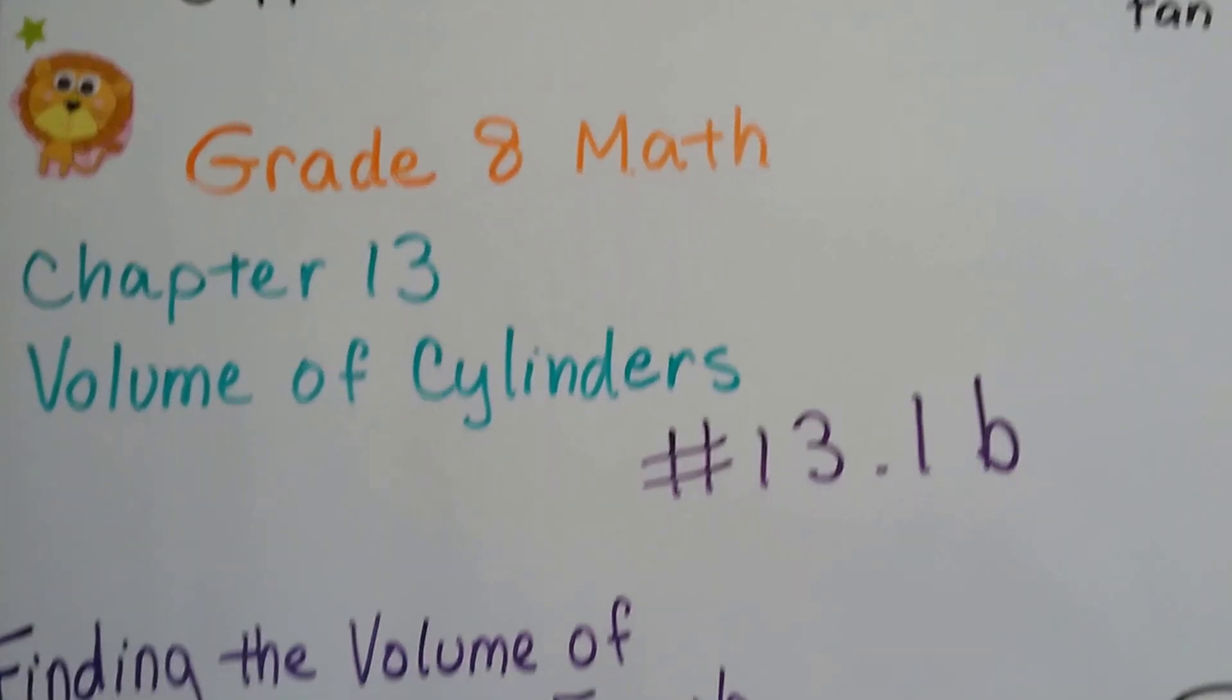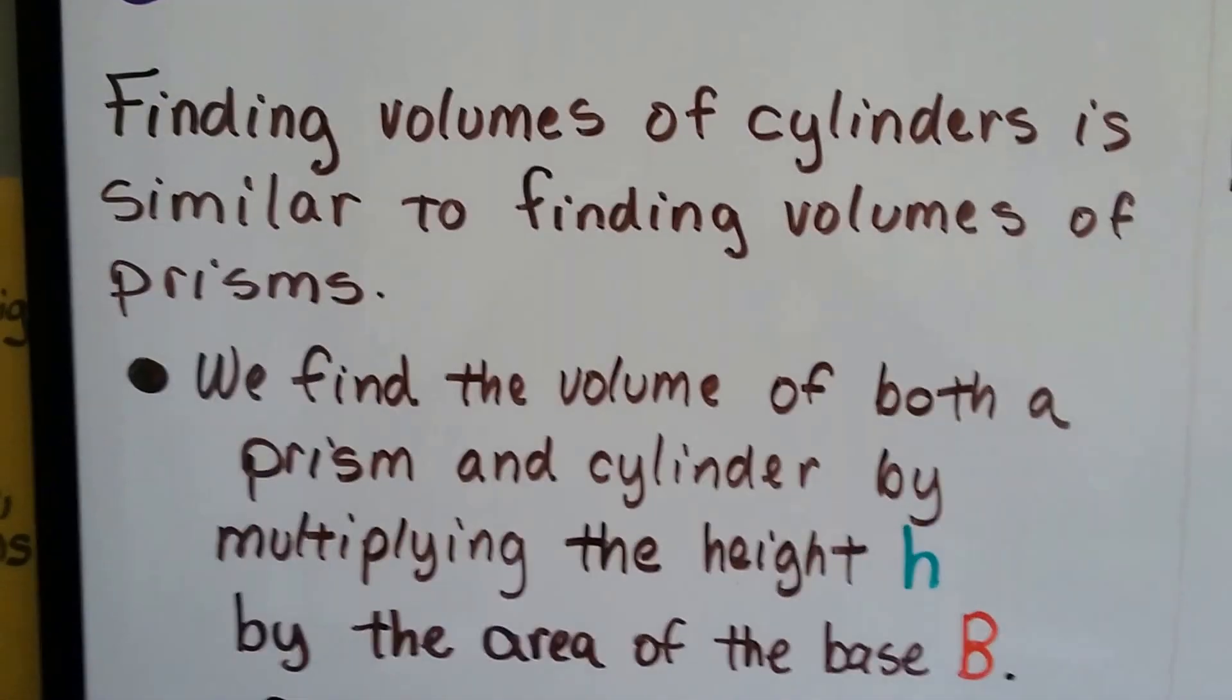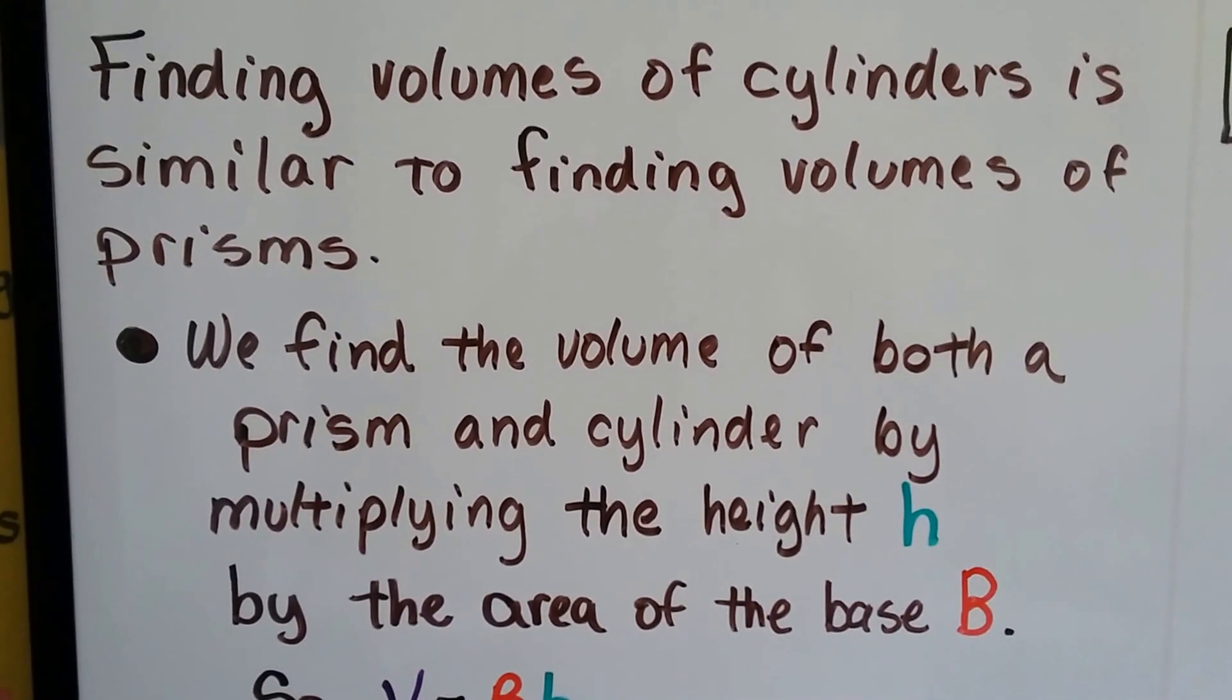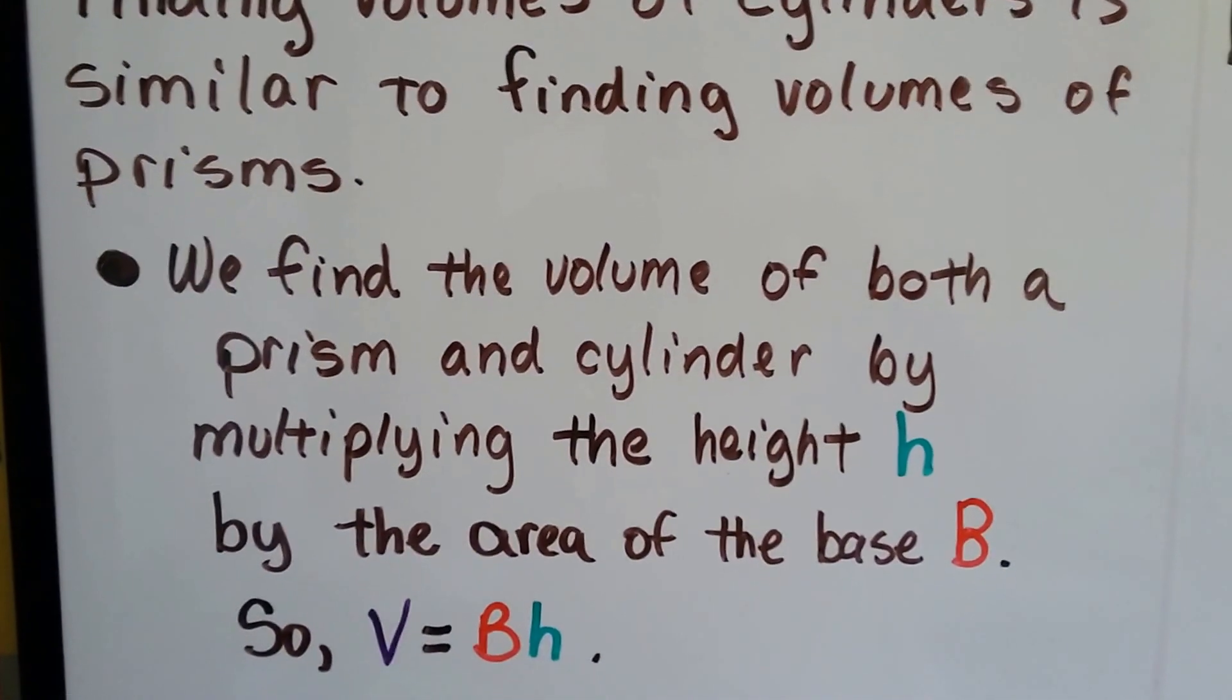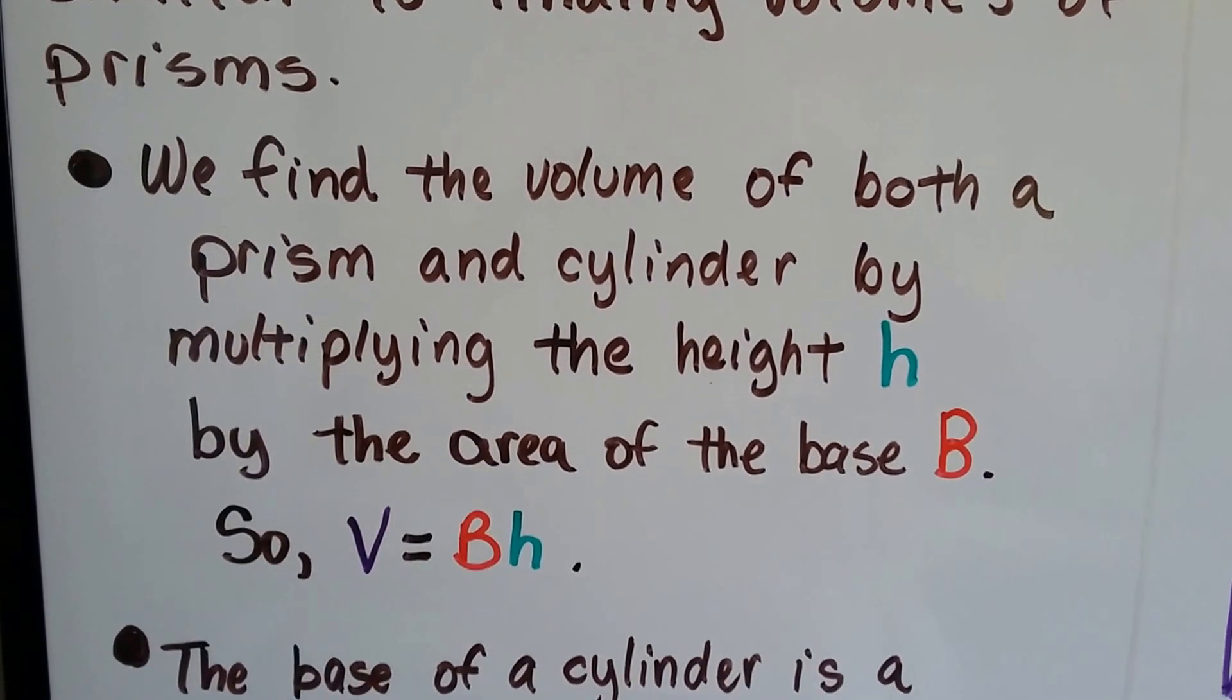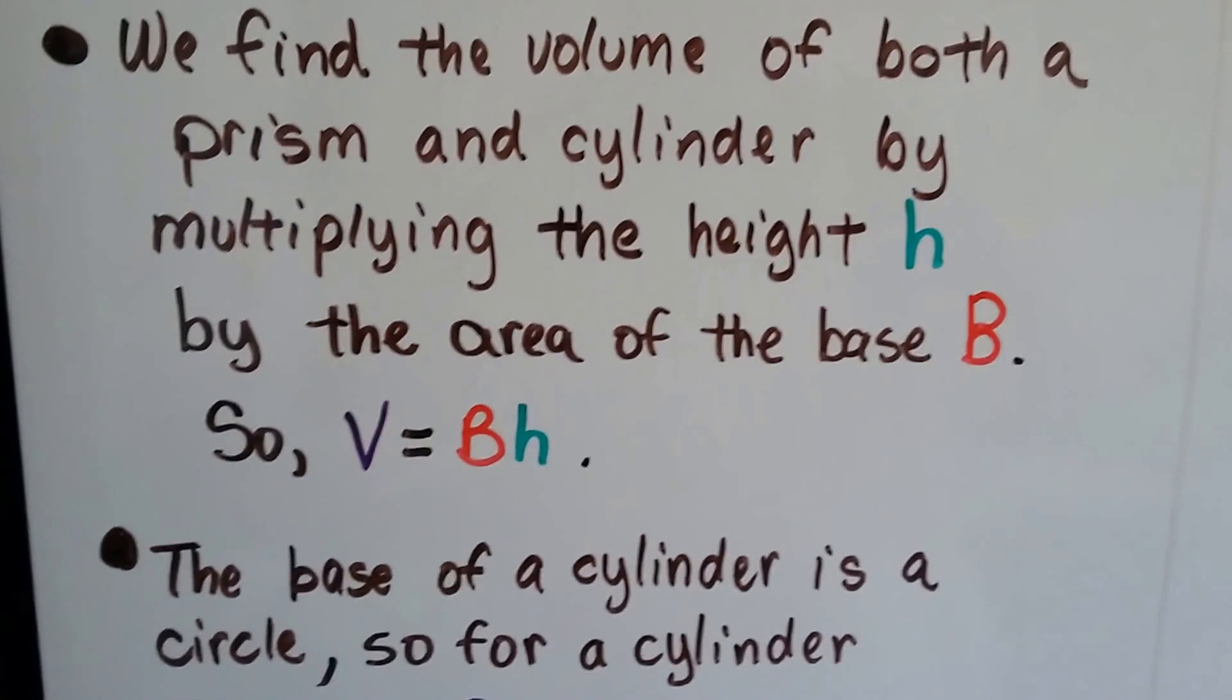Grade 8 math number 13.1b, finding the volume of a cylinder using a formula. Finding volumes of cylinders is similar to finding volumes of prisms. We find the volume of both a prism and a cylinder by multiplying the height h by the area of the base B. So V equals Bh, the volume equals the base times the height.